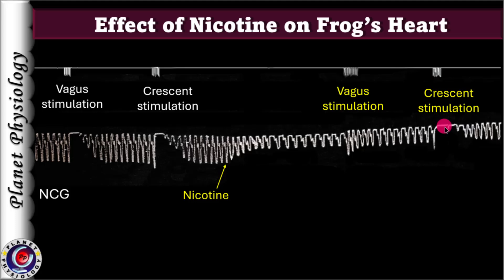So why does this happen? Before nicotine application, vagus stimulation stopped the heart, but after nicotine it did not. Yet the response to crescent stimulation remained unchanged. This suggests that nicotine acted somewhere between the vagus and the crescent.